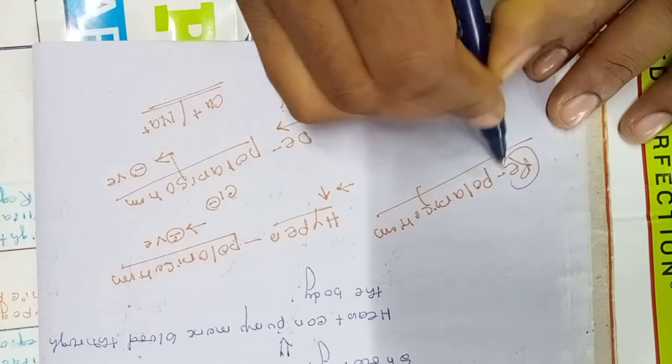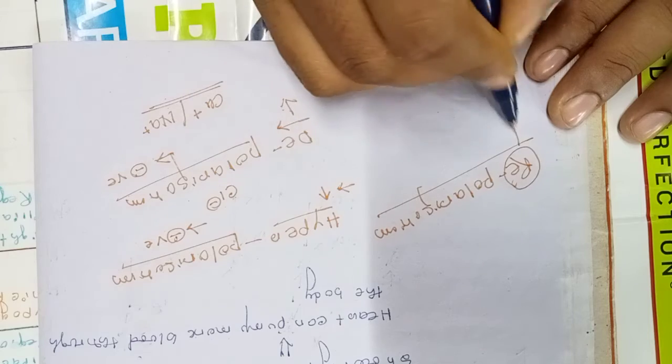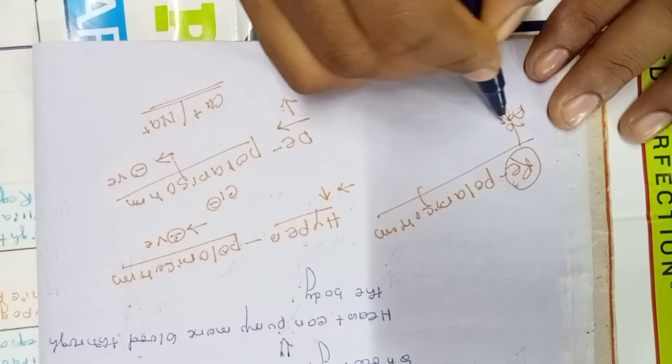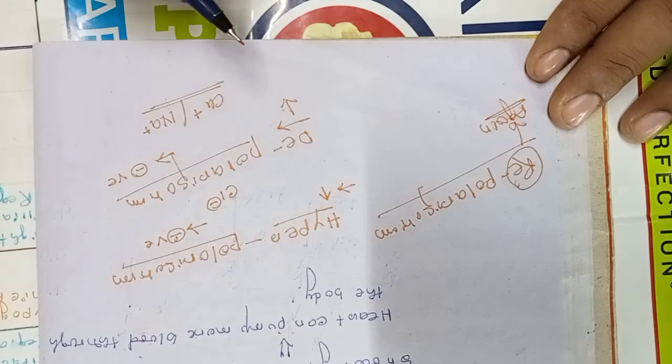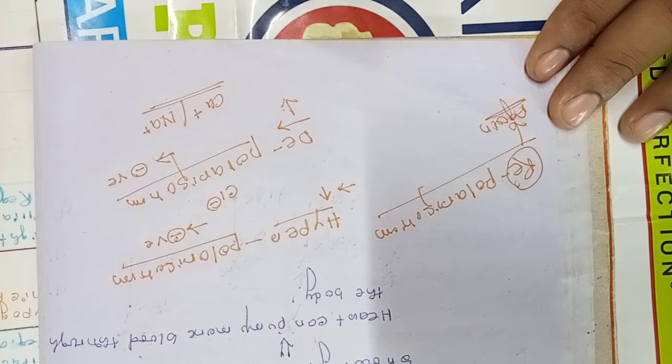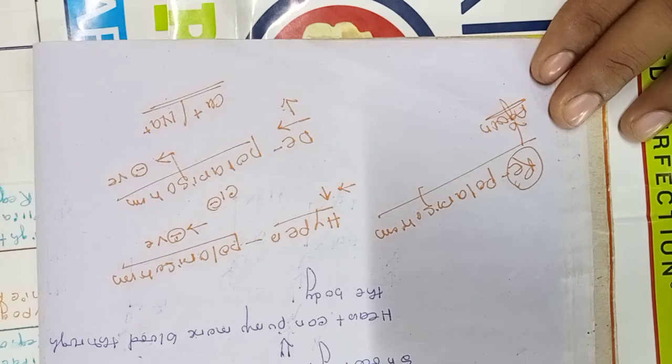Re means again, polarization means negativity. So again negativity. When the cell has excess negativity, that is called repolarization.